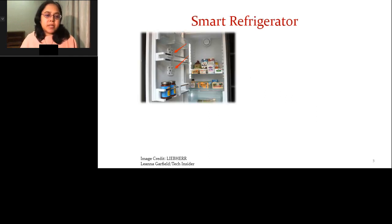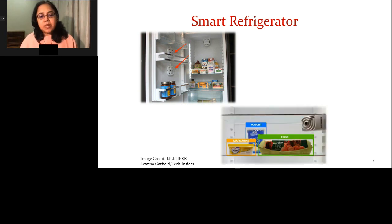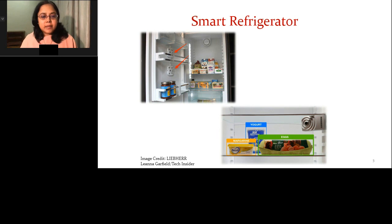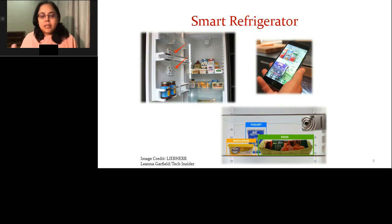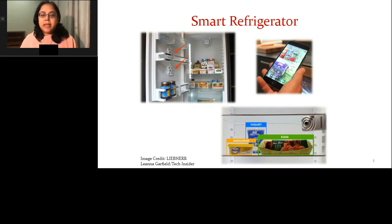Here is an example of a smart refrigerator. You have cameras inside it that can take pictures, and a computing system that uses machine learning algorithms to identify objects within the refrigerator. From there it can figure out which objects are inside and which are missing or finished, and accordingly send an alert to your mobile phone saying what new items you need to buy from the grocery. That's the concept of how it can actually make your life very easy.